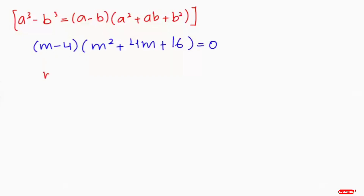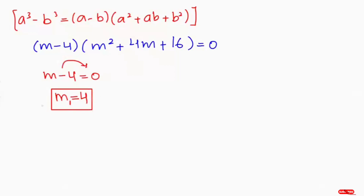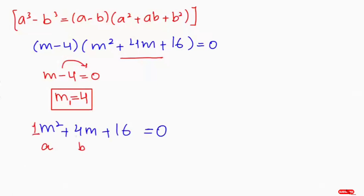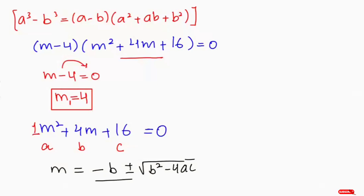Now we get two cases. Case 1: m minus 4 equals 0, so m equals 4. That gives us m1 equals 4. For case 2, we solve m squared plus 4m plus 16 equals 0. This is a quadratic equation where coefficient a is 1, b is 4, and c is 16. I'll find the value of m by plugging into the quadratic formula: m equals minus b plus or minus root of b squared minus 4ac over 2a.